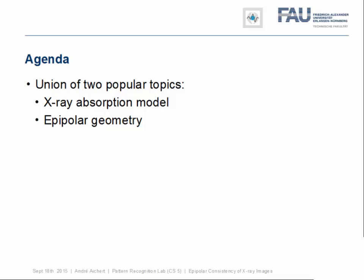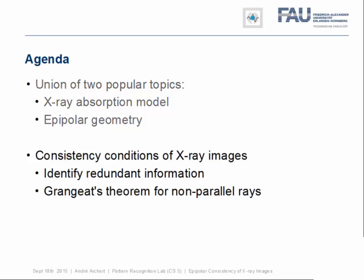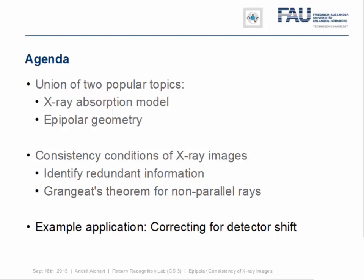This video combines two popular topics in medical imaging and computer vision: a simple absorption-only model of X-ray physics called the Beer-Lambert Law and the epipolar geometry of two pinhole cameras. We will combine the two to identify redundant information in projection images, which gives rise to consistency conditions that apply to any two X-ray images of the same object. We will need to use Grangeat's theorem to account for non-parallel ray geometries. Finally, we will present two example applications for correcting detector shifts solely based on the consistency between reference images.